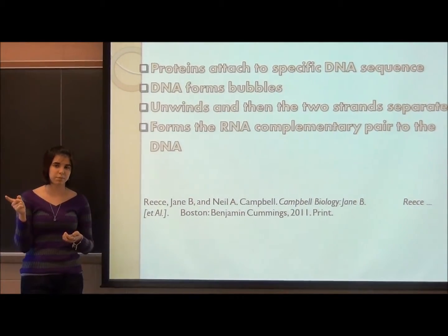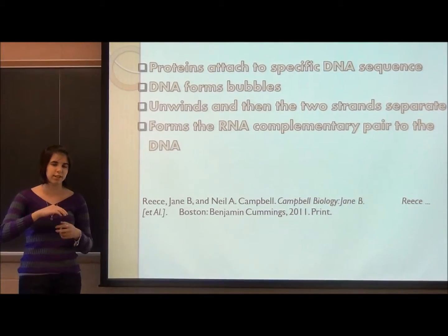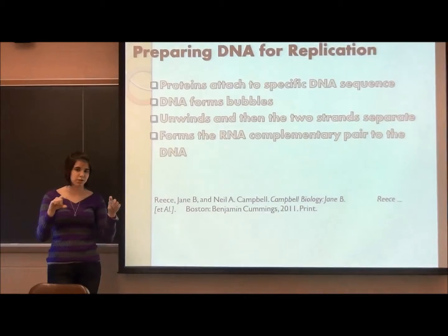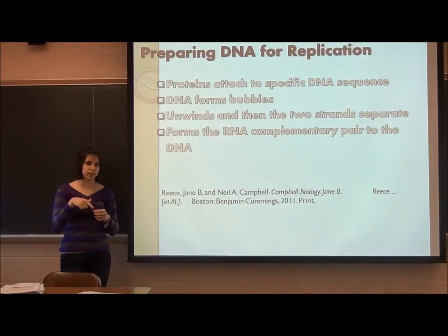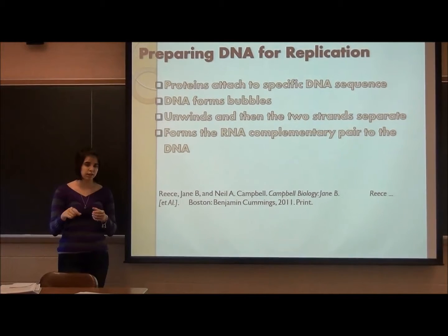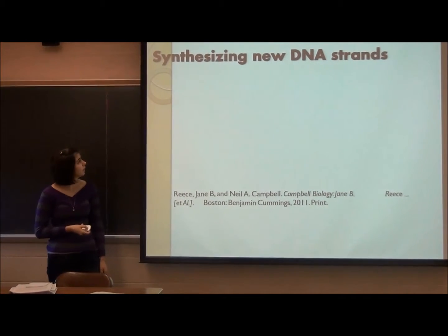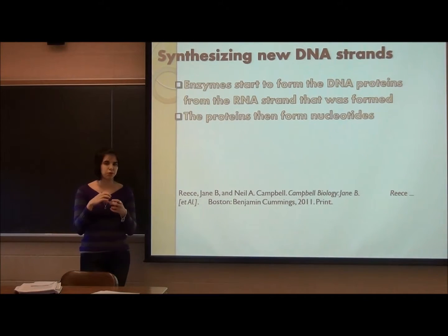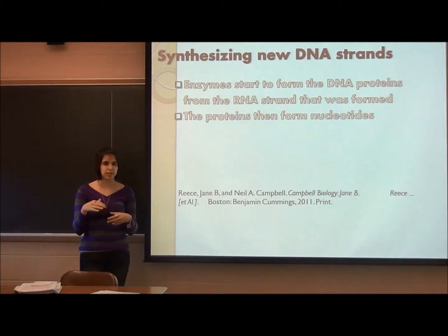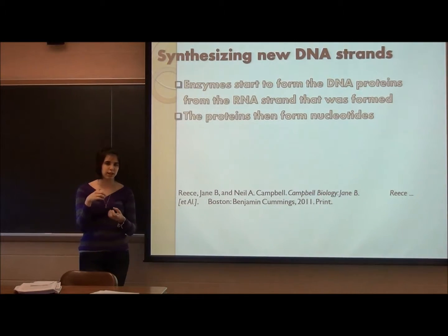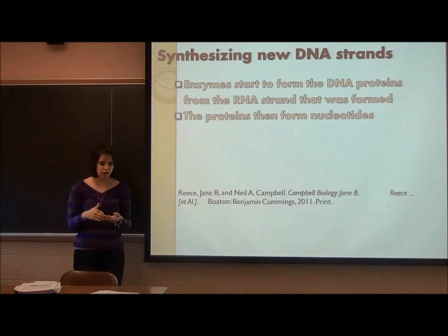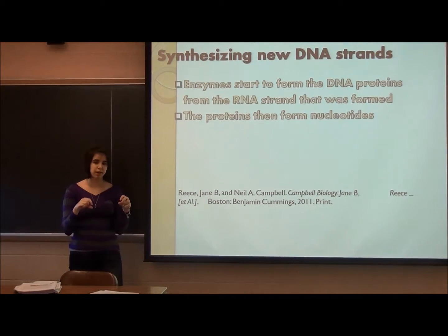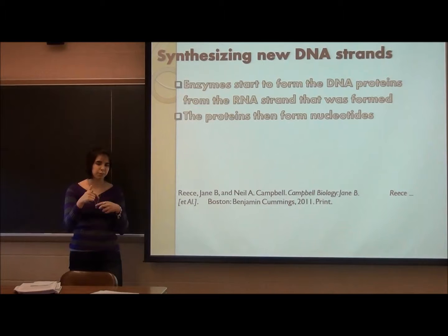And then as the DNA is separating, RNA complement nucleotides will come to each nucleotide on the DNA strand, because as the parent strands, which are the two old strands of DNA, are separating, the RNA nucleotide goes to that parent strand and gets the complementary nucleotide for each strand in that process. As we synthesize the new DNA, the enzymes start to form a new DNA strand called the daughter strand, as the RNA is going on to the complement strand. This DNA strand will be complementary to that parent strand, and then these proteins will form the new nucleotides, which will be complementary to that parent strand to form the daughter strand.